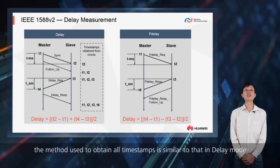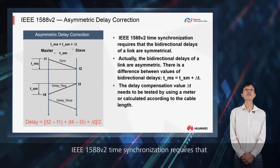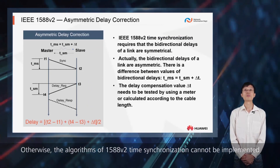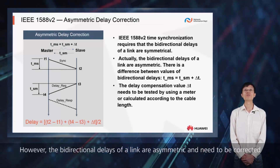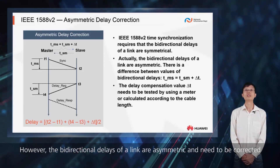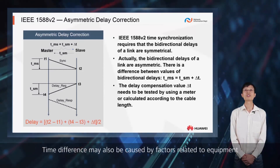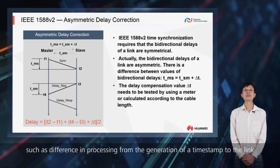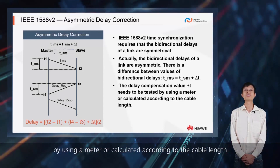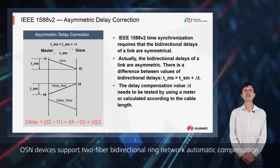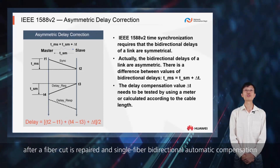In p-delay mode, the method used to obtain all timestamps is similar to that in delay mode. IEEE 1588 version 2 time synchronization requires that the bi-directional delays of a link are symmetrical; otherwise, the algorithms cannot be implemented correctly. However, the bi-directional delays of a link are often asymmetric and need to be corrected. Asymmetric delay may be caused by factors related to links, such as length difference of cables in the two directions, or equipment factors such as difference in processing time from the generation of a timestamp to the link. The delay compensation value delta T needs to be tested using a meter or calculated according to the cable length. OSN devices support two fiber bi-directional ring network automatic compensation after a fiber cut is repaired, and single fiber bi-directional automatic compensation.